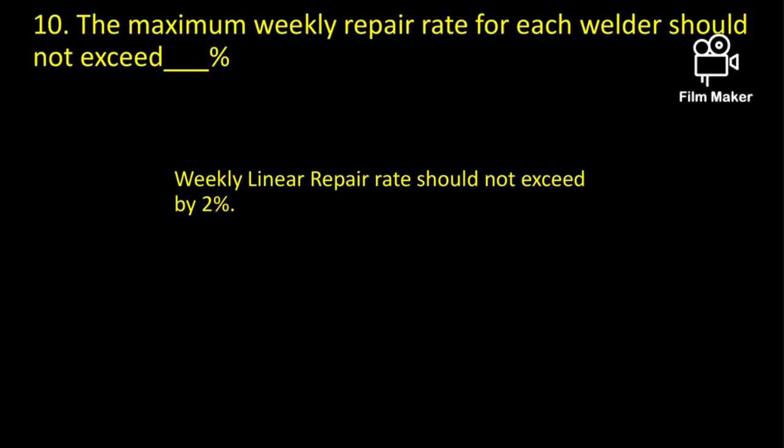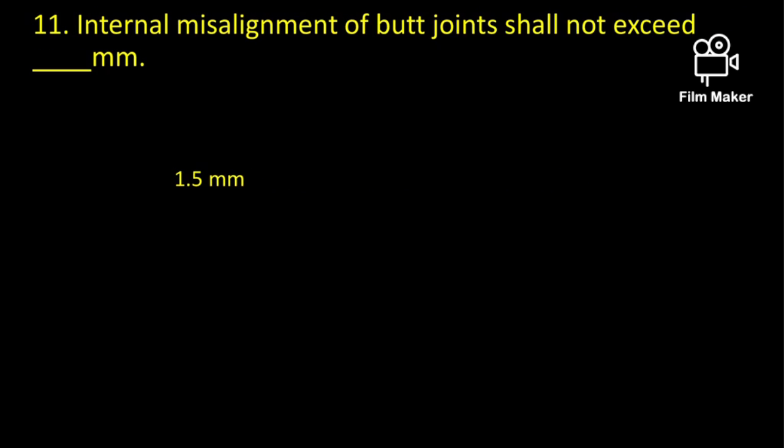The maximum weekly repair rate for each welder should not exceed 2%. Internal misalignment of butt joints shall not exceed — the maximum 1.5 mm misalignment is accepted.